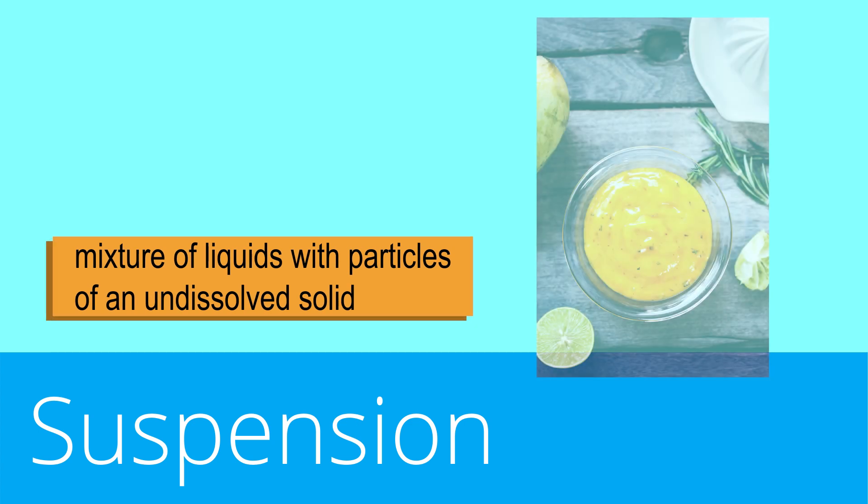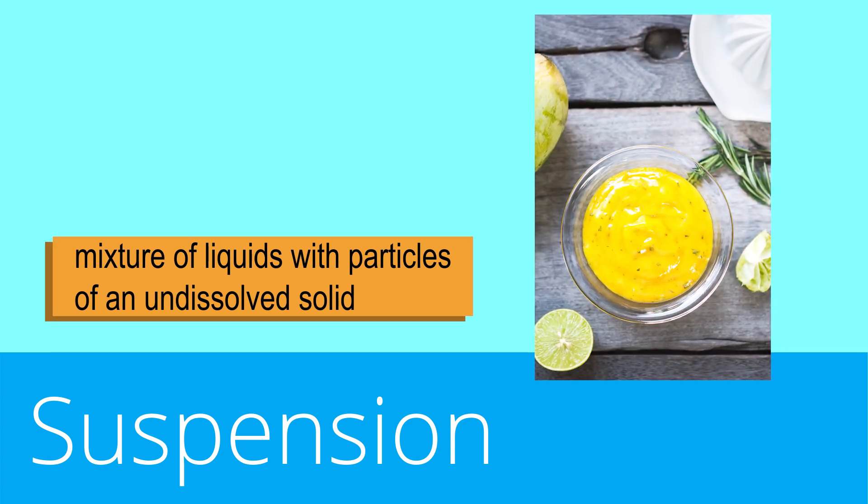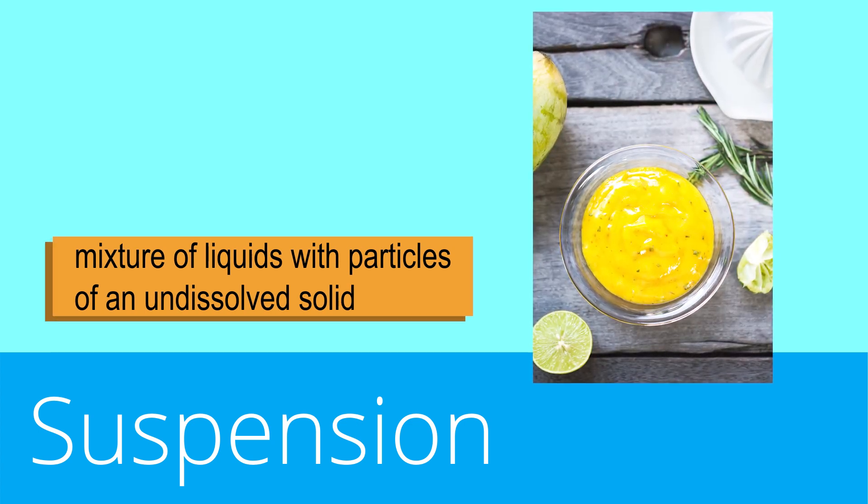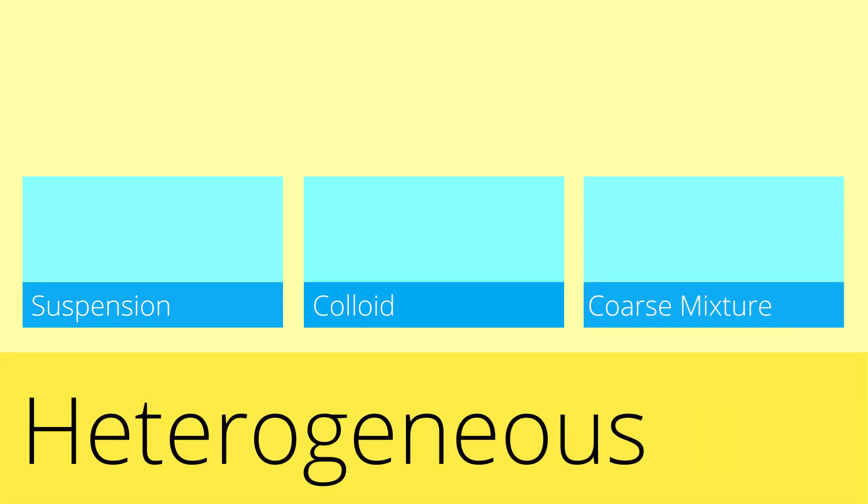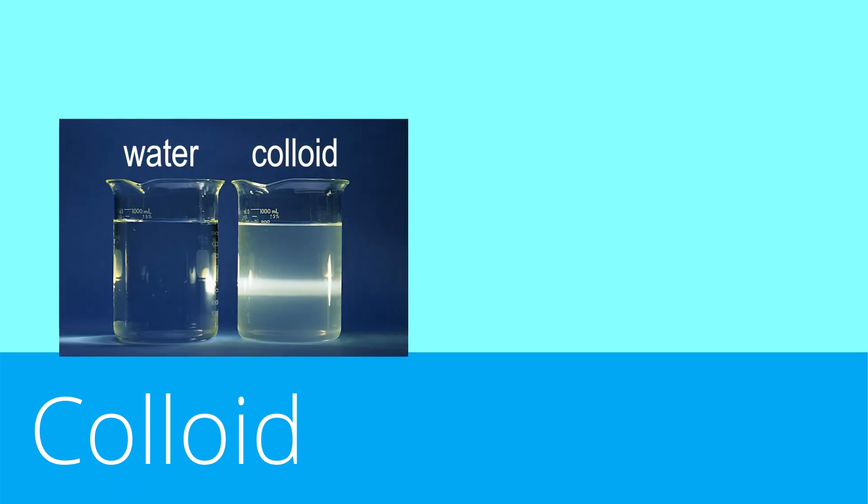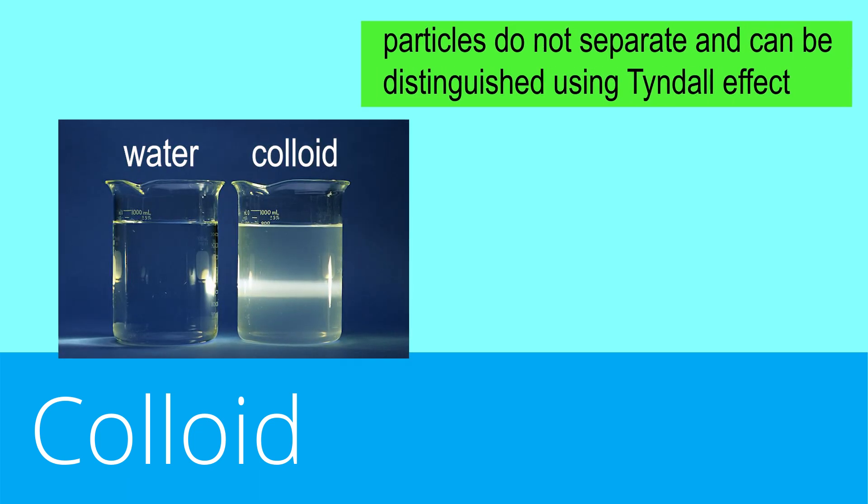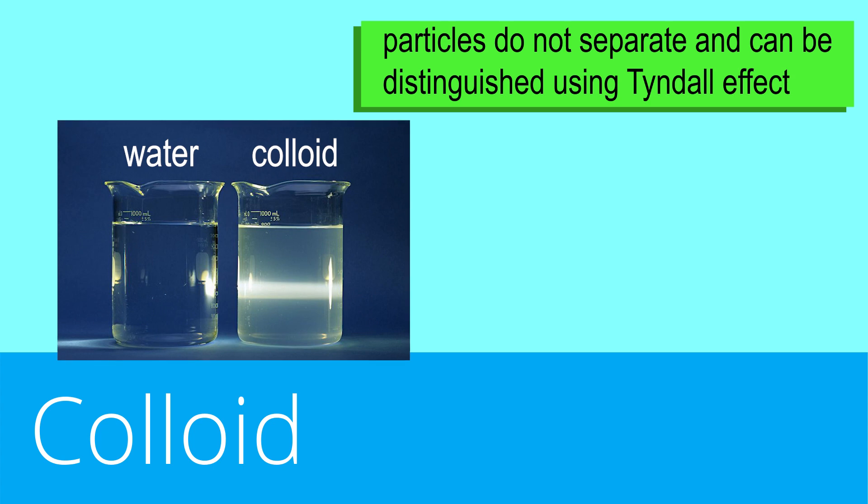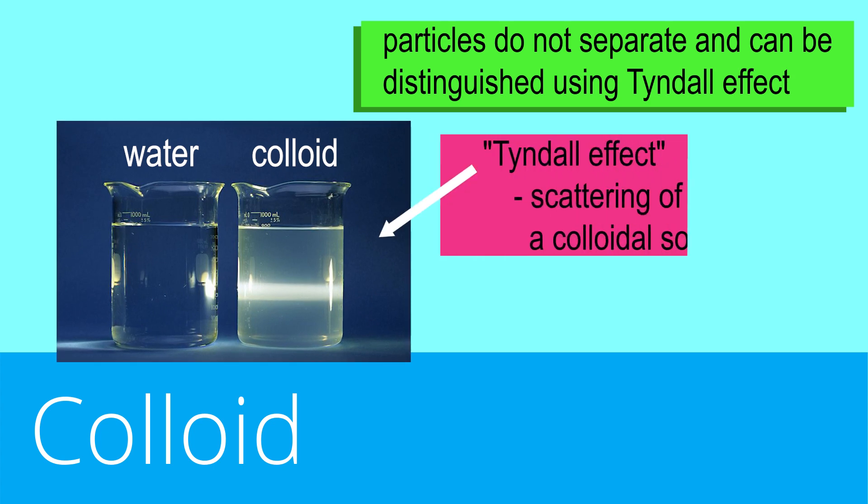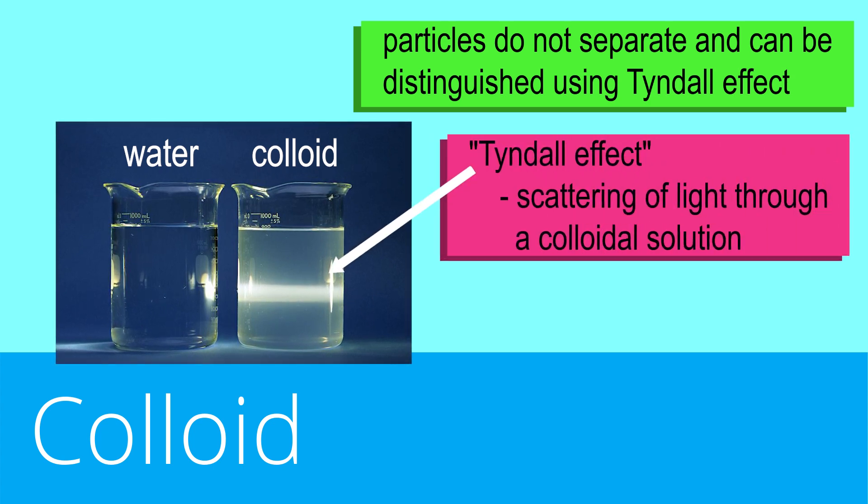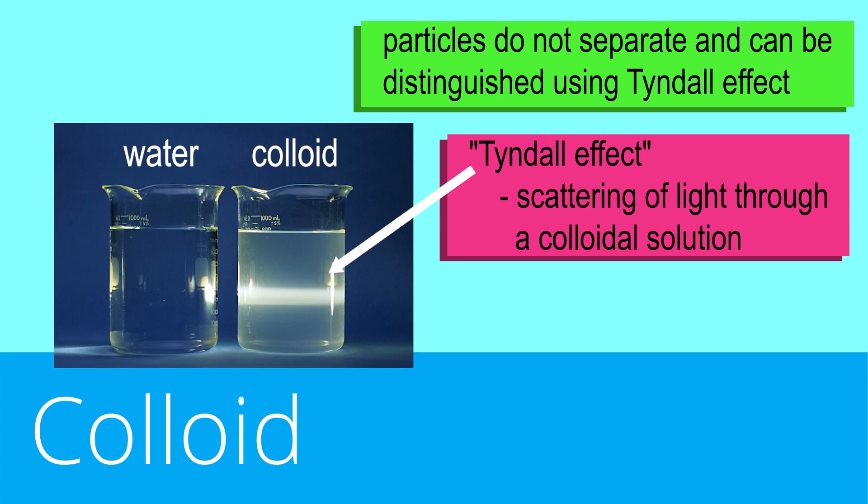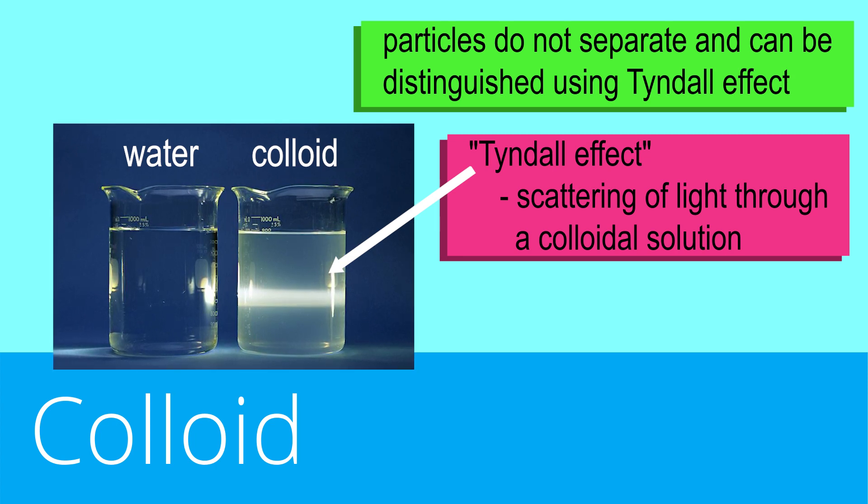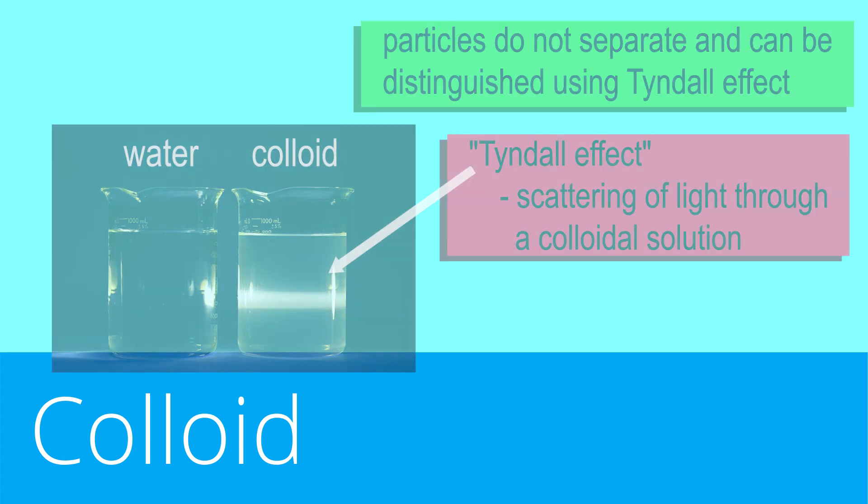A suspension is a mixture of liquids with particles of an undissolved solid. Salad dressing is an example of a suspension. A colloid is an intermediate between a solution and a suspension. Particles of a colloid do not separate and can be distinguished using a scattering of light called Tyndall effect. When light passes through a colloidal solution, light scatters because of the particles dispersed in the solution.